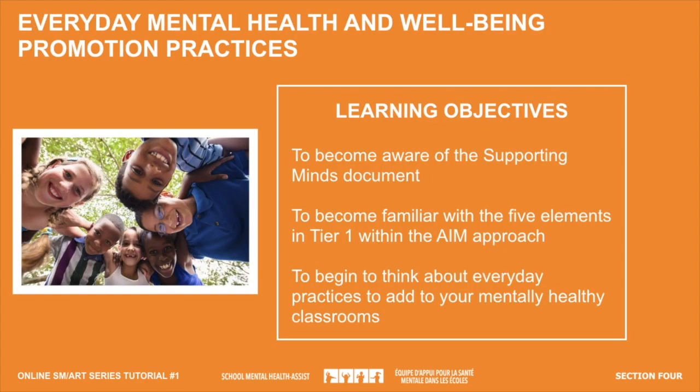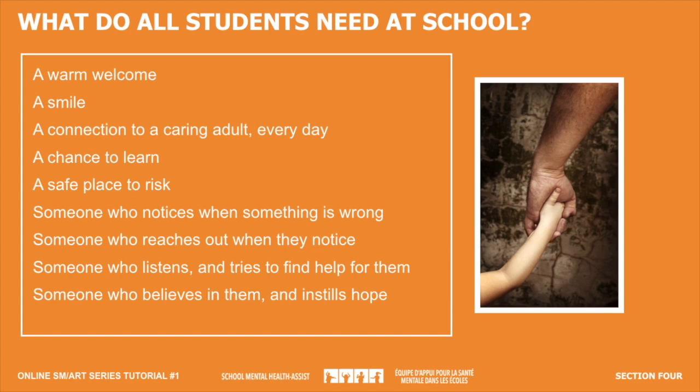The learning objectives for Section 4 are to become aware of the Supporting Minds document, to become familiar with the five elements in Tier 1 within the AIM approach, and to begin to think about everyday practices to add to your mentally healthy classroom. When it comes to general well-being at school, staff who provide welcoming and caring things go a long way toward creating a caring classroom environment where students learn academically at the same time that they grow in character and confidence.